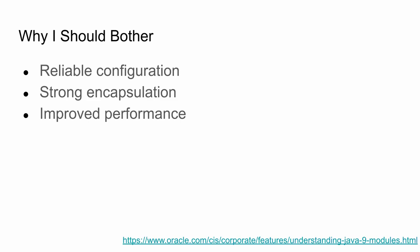One may ask: why should they bother using module path over class path? The key points come from an Oracle article from six years ago. First is reliable configuration: dependencies are checked not only at compile time but also at runtime. For example, if you've ever run into a NoClassDefFoundError all of a sudden after a week of your app running in production, using module path reduces the likelihood of things like that happening.